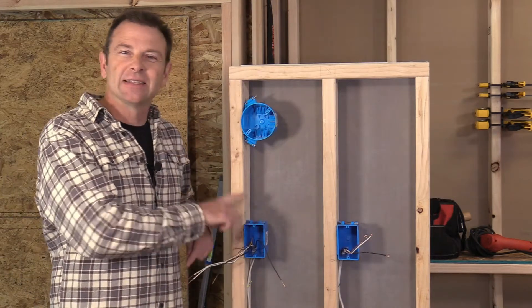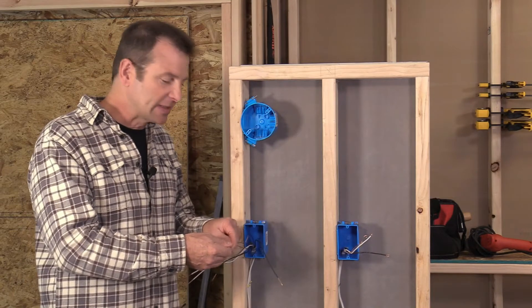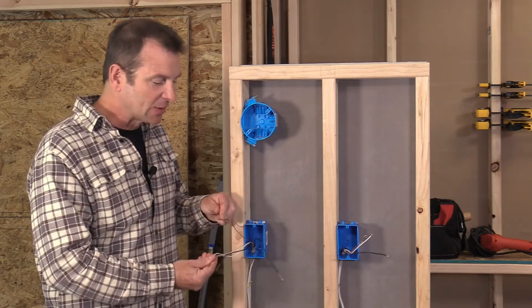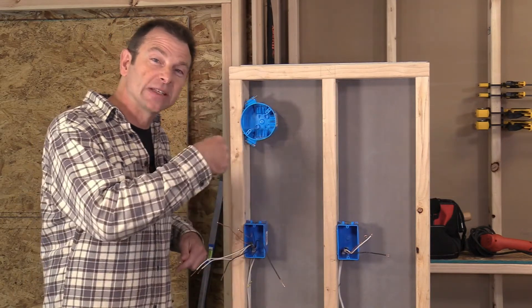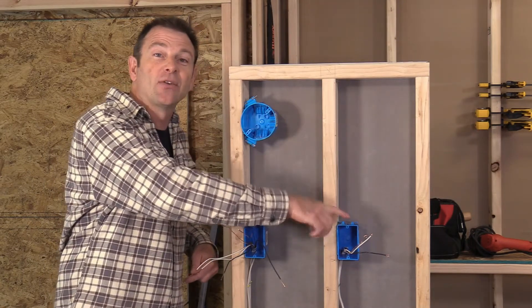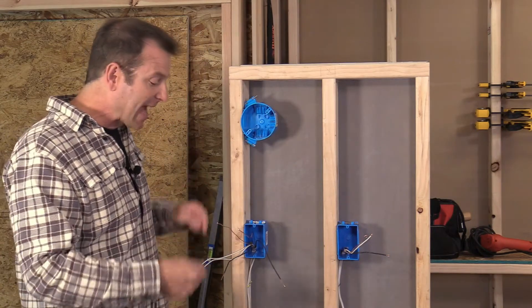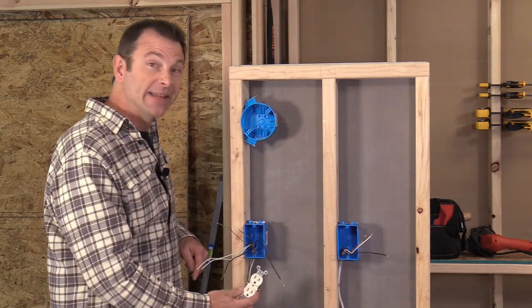If we were using this as just a simple junction box, we could splice these two wires together and all of our other like wires together. It's going to serve to send our power to this junction box where we then have our end of the run receptacle. But what we want to do is to add another receptacle in this box.